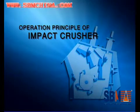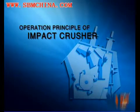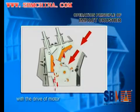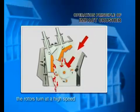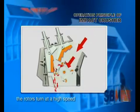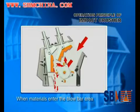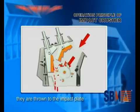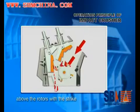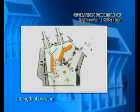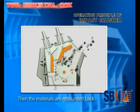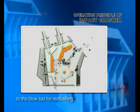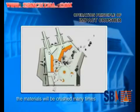Operation principle of impact crusher: during operation, with a drive of motor, the rotors turn at high speed. When materials enter the blow bar area, they are thrown to the impact plate above the rotors with the strike strength of the blow bar. The materials are then rebounded back to the blow bar for re-crushing.